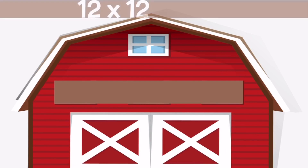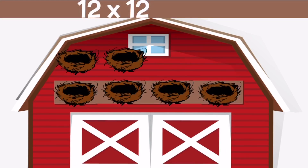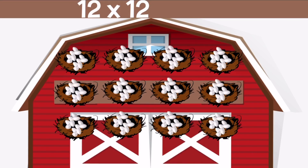12 times 12 — we have 12 nests with one dozen eggs in each nest. Let's count them all up and we get 144 eggs.